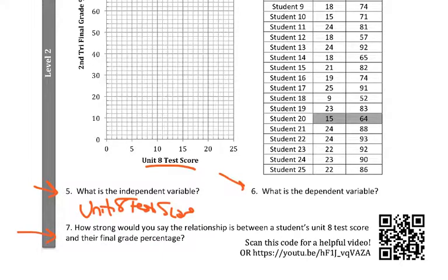Then, this is kind of an opinion question. Once you have all of your dots placed down, I kind of want you to tell me how strong do you think the relationship is between the Unit 8 test score and their final grade. Is it a super strong relationship? Is it very strong? Maybe it's just kind of strong. Maybe it's really weak. You're just going to have to plot the dots and tell me how strong do you think their relationship is.